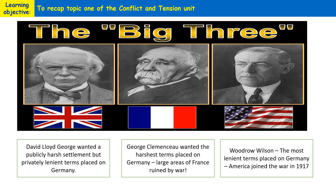He also didn't want to punish Germany too harshly because he knew that weakening Germany sufficiently as a result of the Treaty of Versailles would potentially allow the conditions for Communism — a growing threat after the Russian Revolution of 1917 — to spread from Eastern Europe into Germany. So he didn't want to allow communism to gain a foothold in Germany after the First World War.